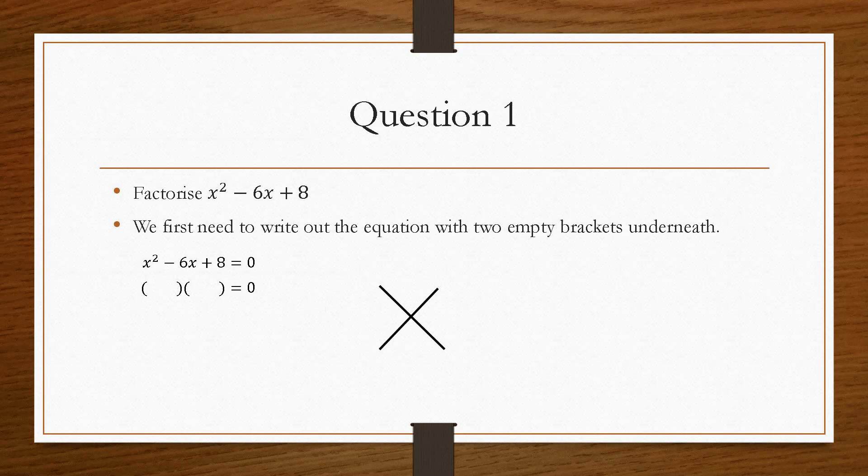If we do a cross, just pop that at the side, then we need to consider the cross as two brackets. The top of the cross refers to the first bracket, and the bottom refers to the second bracket.